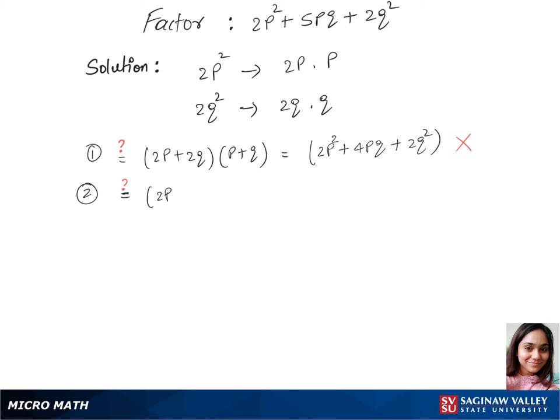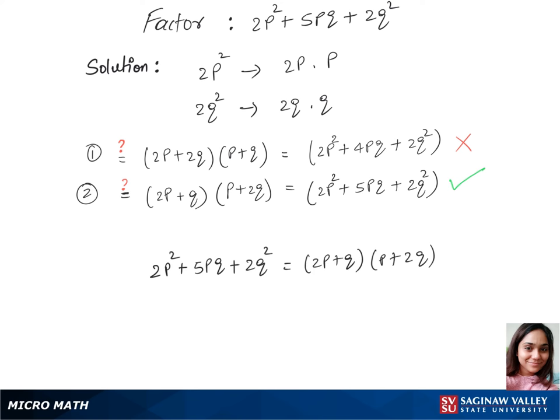So we'll do our second guess by switching up those values: 2p plus q times p plus 2q. Now this gives 2p² plus 5pq plus 2q², and this matches up with our given trinomial. So the factors for the trinomial given are 2p plus q times p plus 2q.